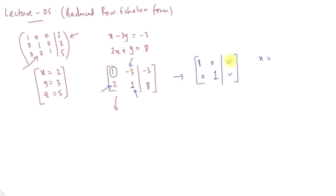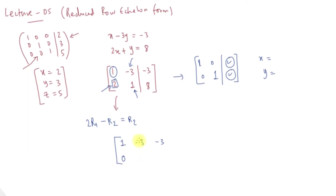x is equal to some value, y is equal to some value. Now, adding the row operations: take the first row, multiply by 2, and subtract from the second row. So R2 becomes: first row multiplied by 2, subtract row 1. We get 1, minus 3, minus 3 for row 1, and for row 2: 2 times 1 minus 1 gives values leading to row reduction.